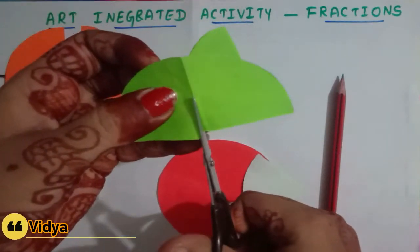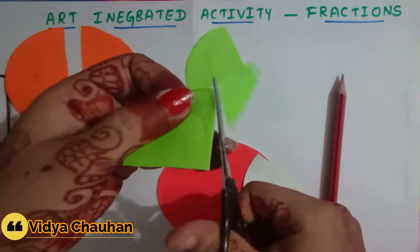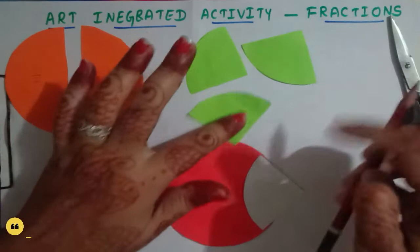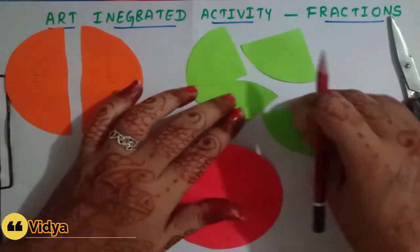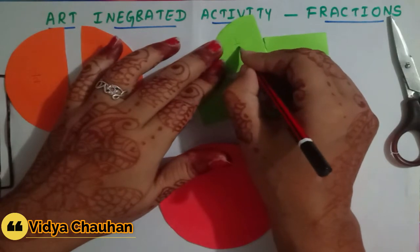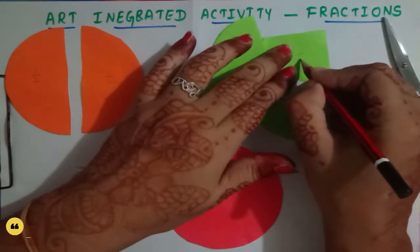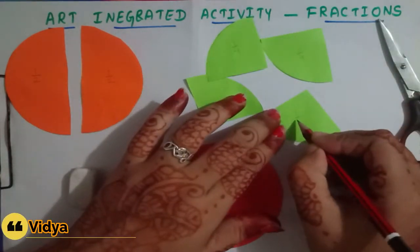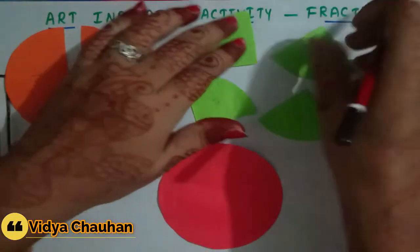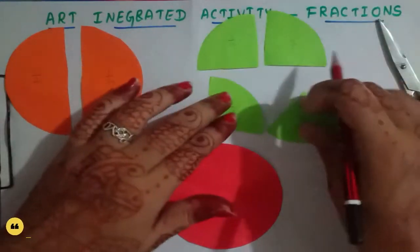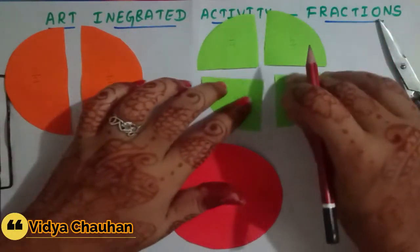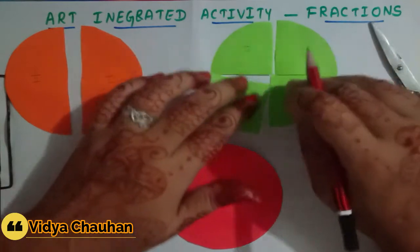Now what fraction should I write for each of these? Since I have divided one whole into four equal parts, it is one upon four, one upon four, one upon four, and one upon four. This is the second part of our fraction — one upon four.